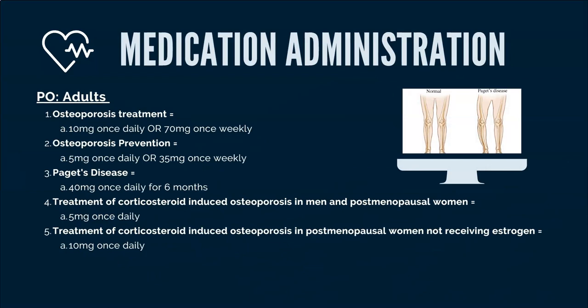For medication administration, there is one route — by mouth, PO. For adults there are different indications. This drug is used for osteoporosis, and the dosage differs for treatment versus prevention of osteoporosis. There is also a dosage for Paget's disease, and for treatment of corticosteroid-induced osteoporosis in men and postmenopausal women not receiving estrogen. One thing to keep in mind is that this drug has poor bioavailability, about 0.6 to 0.8%.